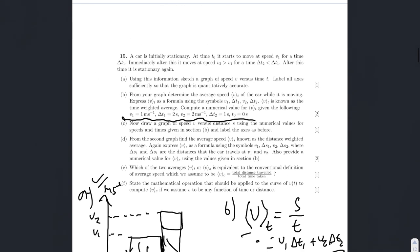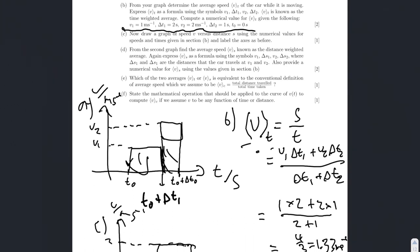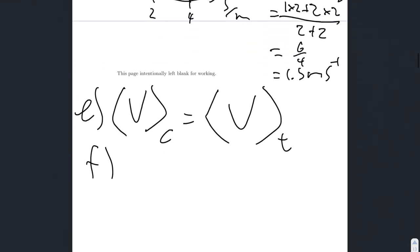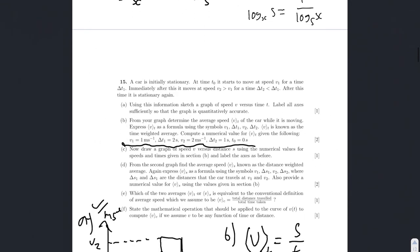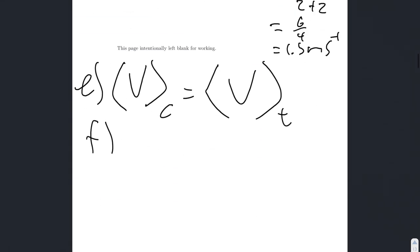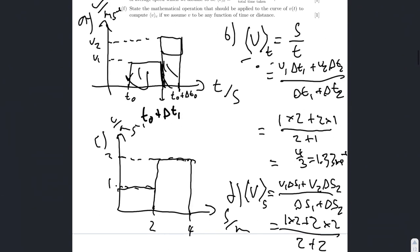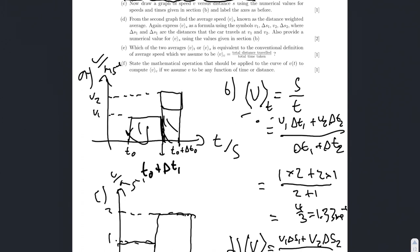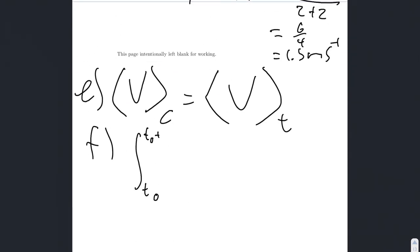So, last part, part f. Instead of the mathematical operation that should be applied to the curve of v of t to compute v of c, if we assume v to be any function of time or distance. So, we need to find the total area under the curve of v of t to find the distance. And then we need to divide that by the time. So, this will look like the integral between t1 and t2 of v with respect to t over t2 minus t1.